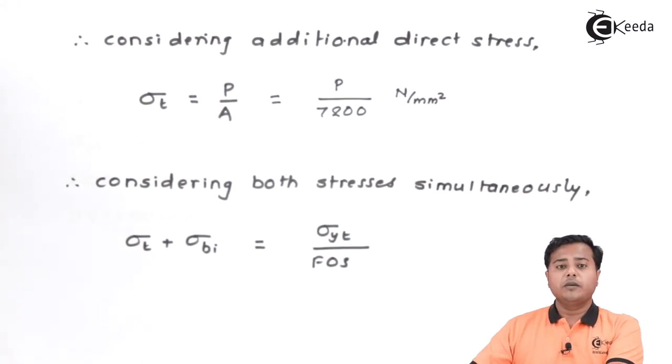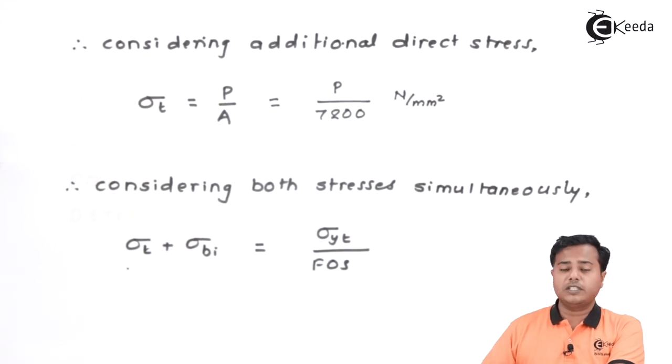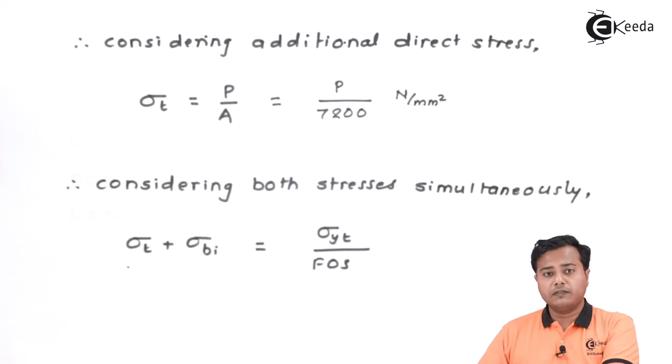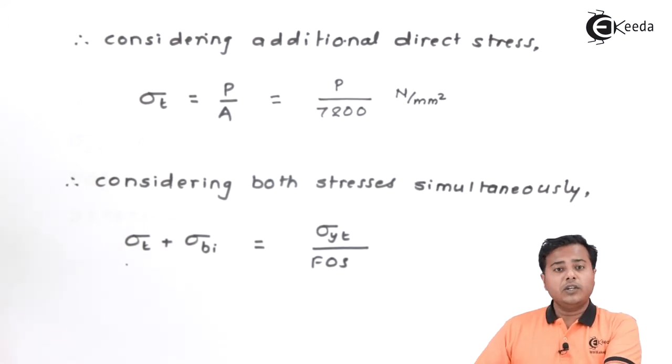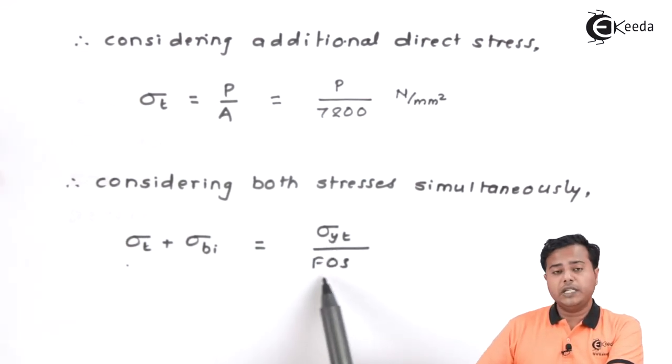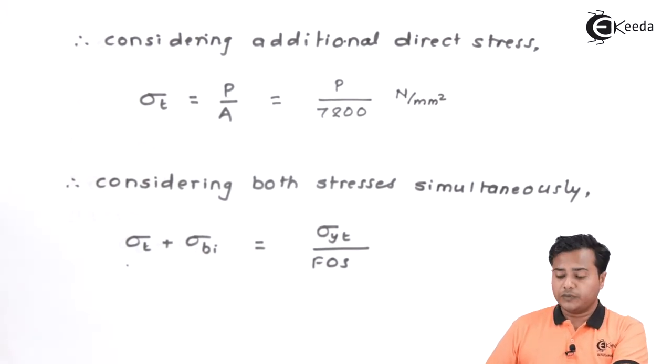We know that both the stresses may occur at the same time and that's why we need to consider their superimposition and therefore considering both of them simultaneously, we will get the total stress is equal to the direct stress plus the bending stress on the inner fiber. But this total stress in order to be safe should be either equal to or less than the possible stress or the maximum allowable stress. The maximum allowable stress will be the yield limit divided by factor of safety. And that is how the expression is obtained. Let's try to combine both of them.